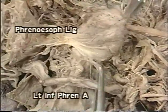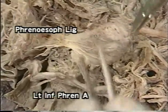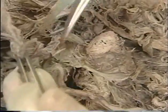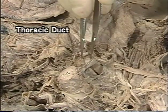A branch of the left inferior phrenic artery passes close to the left margin of the esophagus and sends a cardioesophageal branch to the lower end of the esophagus. After removal of the diaphragm, we can see the thoracic duct.